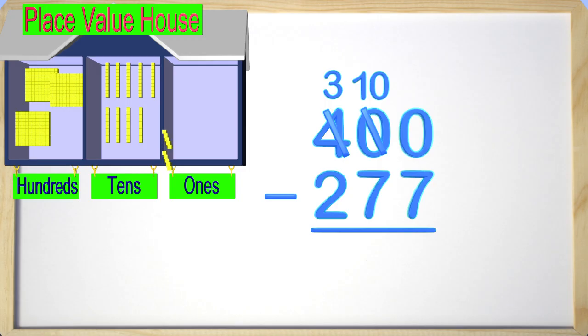So we take one of the tens and bring it to the ones place, and that leaves nine tens in the tens place. Awesome job! We took one of the tens from the tens place and now have ten ones to subtract with. Great job, guys!